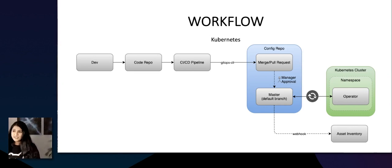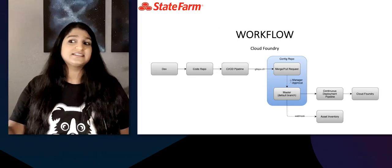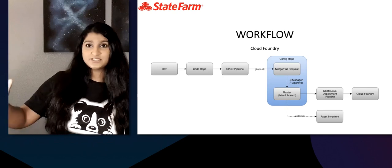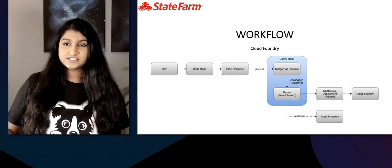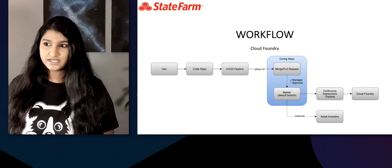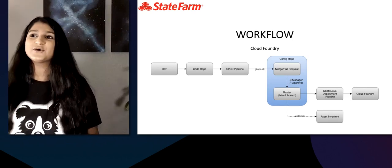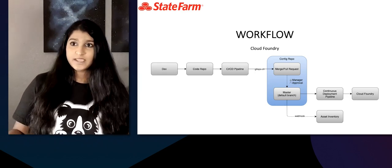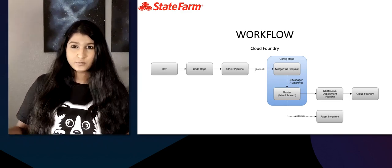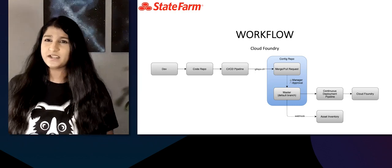Next, we have our Cloud Foundry workflow. This workflow is exactly the same up to the config repo — nothing has changed there. The only difference is that to get to production, it uses continuous deployment pipelines; there's no Flux in this process. In those continuous deployment pipelines, we've added lots of reusable pipeline stages to ease adoption of GitOps by our consumers.